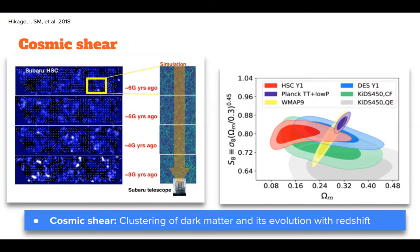We've used many, many different galaxies and stacked their shapes together to figure out the ellipticity field. The second thing to know is that we can do a tomographic reconstruction of dark matter — like a CT scan. In the upper panel, we're using galaxies that are really far away. As you come closer and closer, we're using galaxies that are a bit closer, and then the closest galaxies we have. When we use the shapes of these galaxies, we learn about the dark matter distribution between them and us.